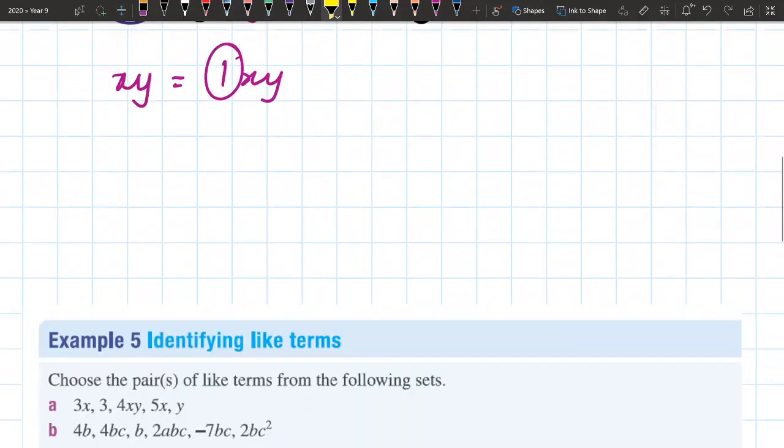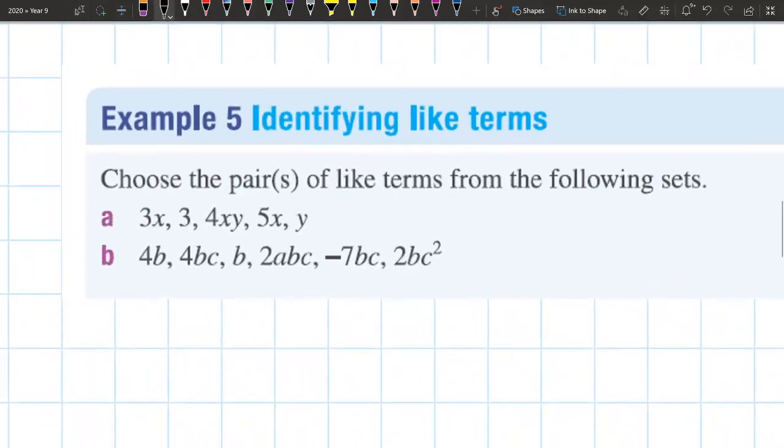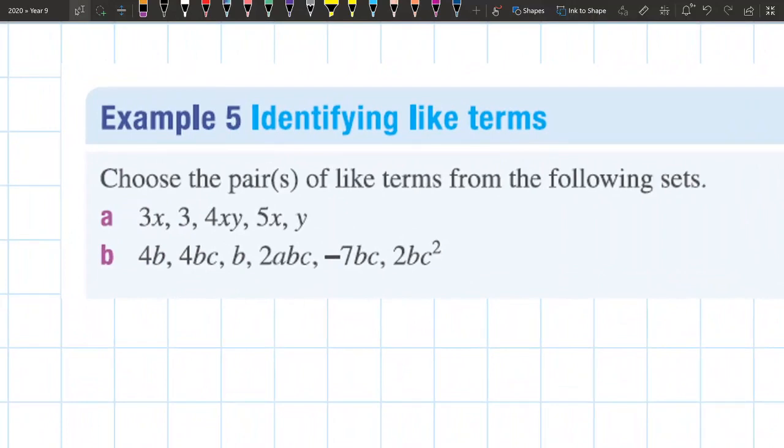So let's go through the first example. This is example number five, identifying like terms. We have to choose the pairs of like terms in the following set. So let's have a look at the first set. I've got 3x, 3, 4xy, 5x, y.